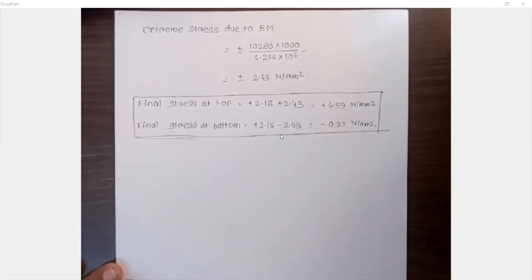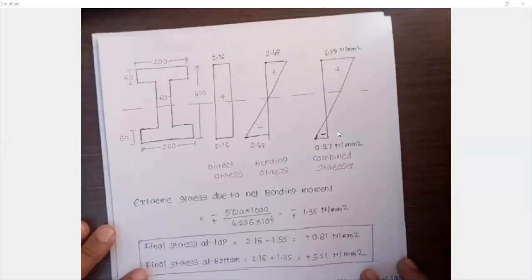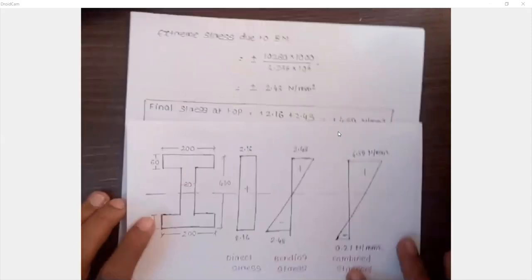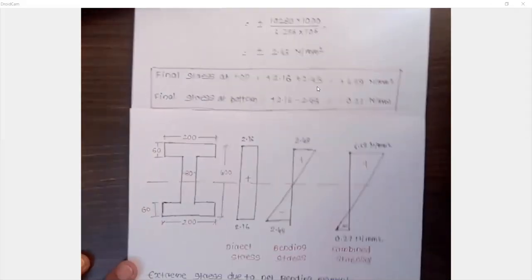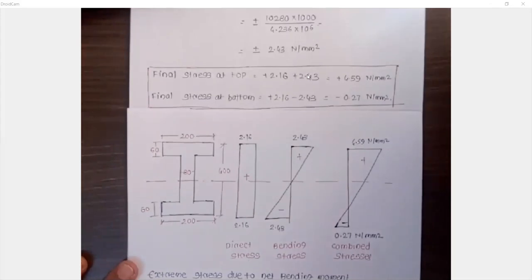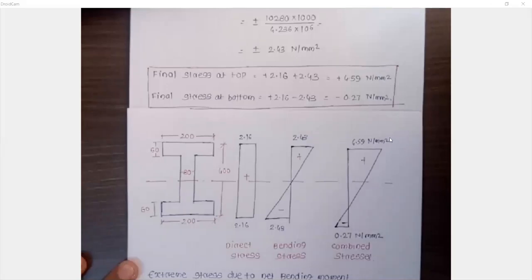Drawing the stress distribution diagram: at the top fiber, direct stress is 2.16 and bending stress is 2.43 (compression), giving a combined stress of 4.59 N/mm². At the bottom fiber, direct stress 2.16 minus bending stress 2.43 gives −0.27 N/mm² (tension). This is how we solve the symmetric I-section problem for stress calculations, which is part of the syllabus along with rectangular section problems.